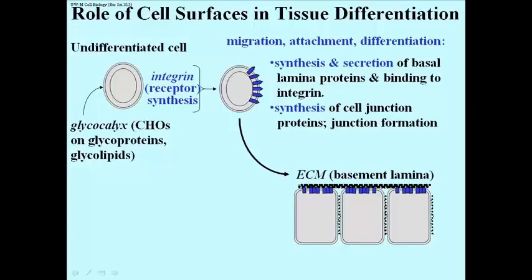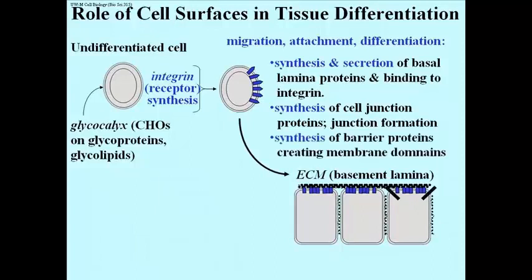What we see is a couple or three cells here attached to one another and bound to a basement lamina or ECM shown at the top. Barrier proteins might be synthesized at some point during this process to keep the junction proteins on the sides of these epithelial cells, and the glycocalyx proteins that will interact to form an ECM on the upper surface.